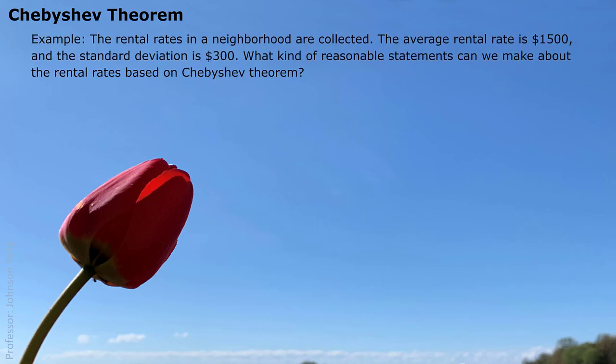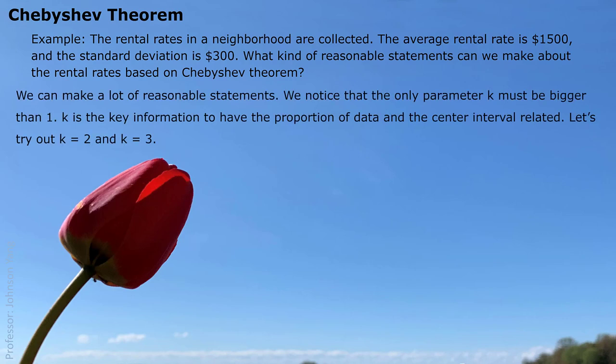Let's look at the example. The rental rates in the neighborhood are collected. We don't care about what kind of distribution — just a general situation. We know the average rental rate is $1,500 and the standard deviation is $300. Based on Chebyshev theorem, let's see what kind of reasonable statements we can make about the rental rates in this neighborhood. We can make a lot of reasonable statements. The only parameter here, k, must be bigger than 1.